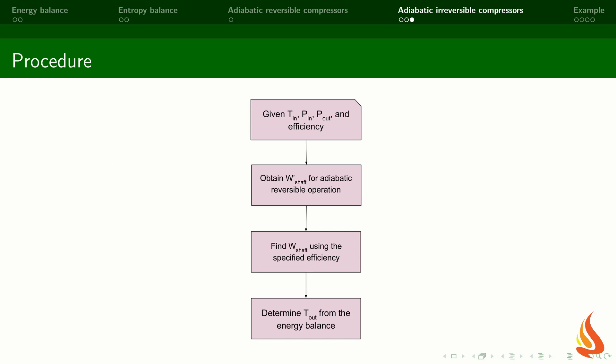This figure outlines the method to calculate the compressor power. We assume that we know the temperature and pressure of the input stream, the pressure of the output stream, and the compressor efficiency. The first step is to calculate the compressor power assuming that its operation is adiabatic and reversible. We use this value in the compressor efficiency to calculate the power of the adiabatic irreversible compressor. The final step is to calculate the temperature of the output stream using the energy balance.